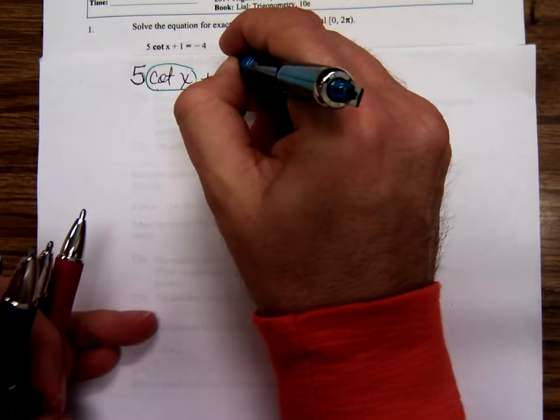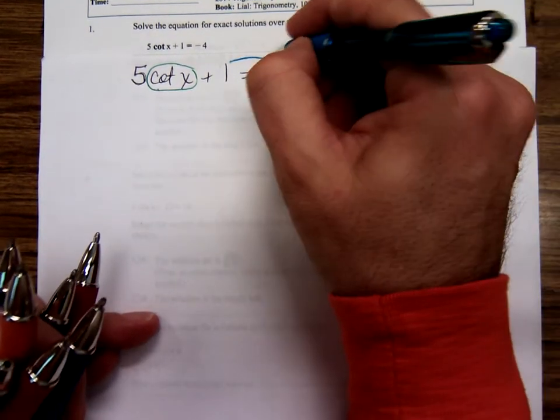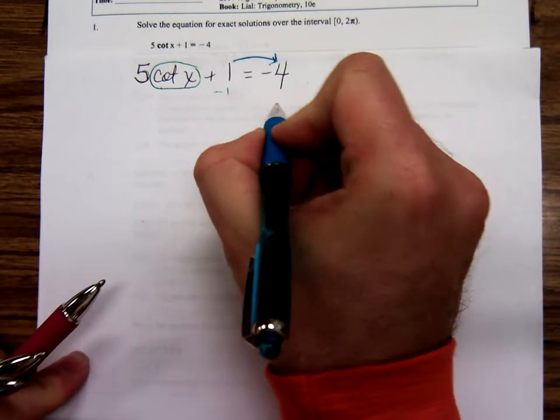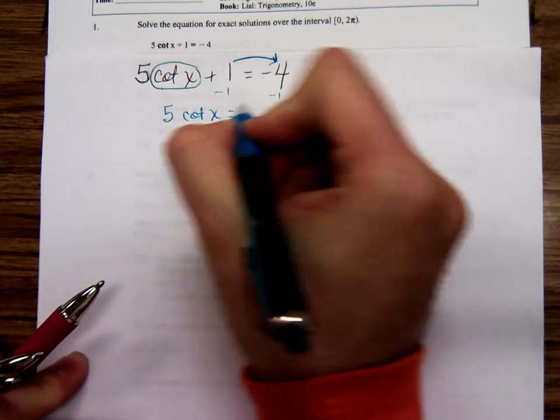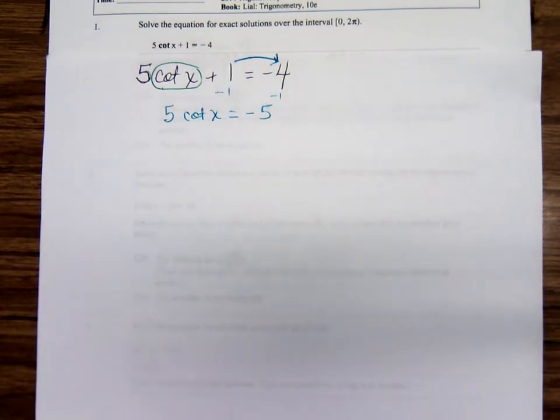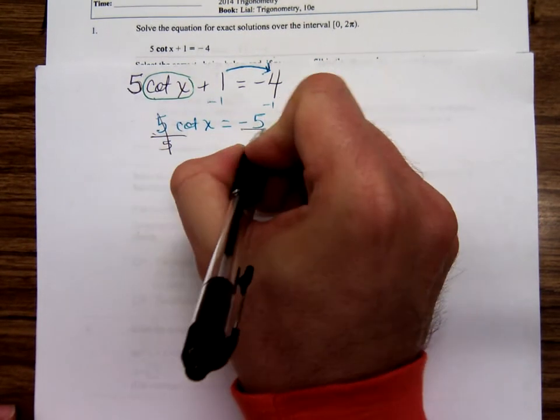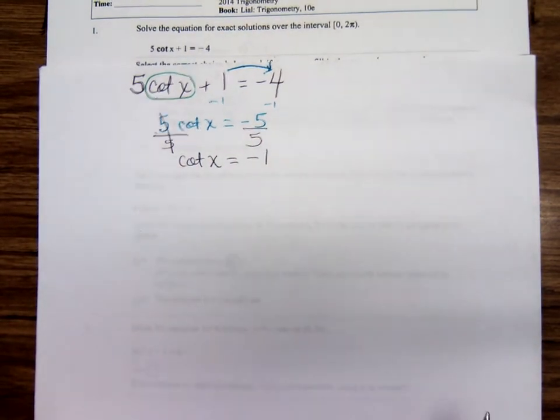I'd subtract one. So we have 5 cotangent x equals negative 5. What else can I do now to try to get that cotangent x by itself? Divide by this 5 right here. So we have cotangent x equals negative 1.